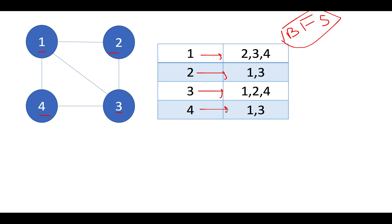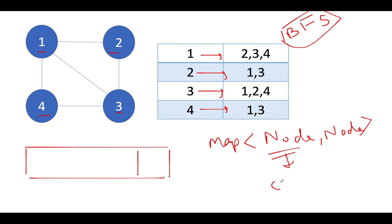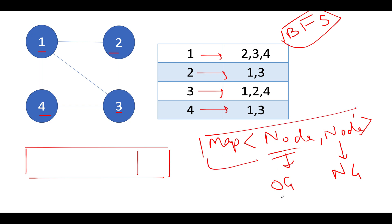In a typical graph BFS problem, we create a queue — so we'll definitely go ahead and create one. We also need to keep track of which nodes have been created, corresponding to the original graph. We use a map where the key is of type Node (the original node, OG) and the value is also of type Node (the new node in the new graph, NG). We are keeping track of all nodes created with respect to the original graph.